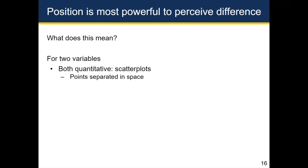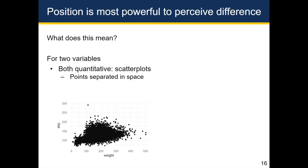If you have two quantitative variables, scatter plots are really nice because the main thing a scatter plot does is help you separate the points in space so you can visualize them easily. Looking at the relationship between weight and systolic blood pressure, this scatter plot helps you visualize that relationship by separating the points in space.